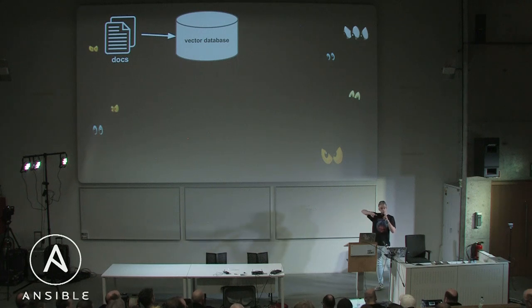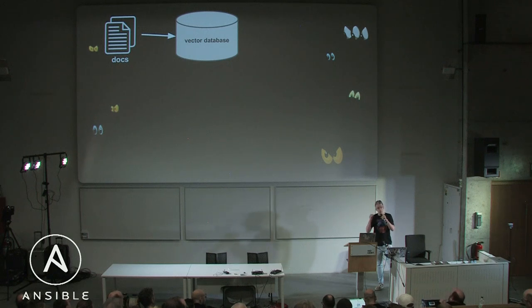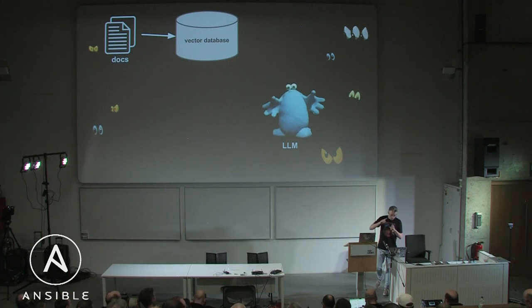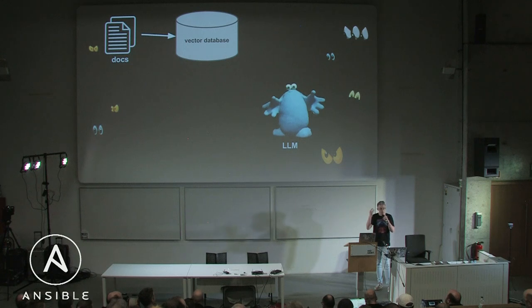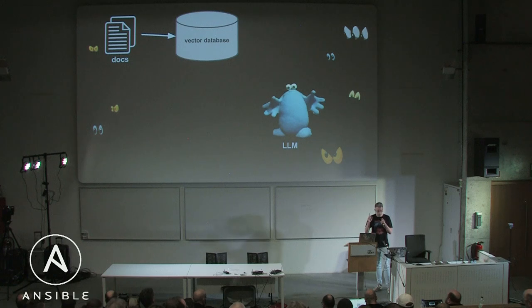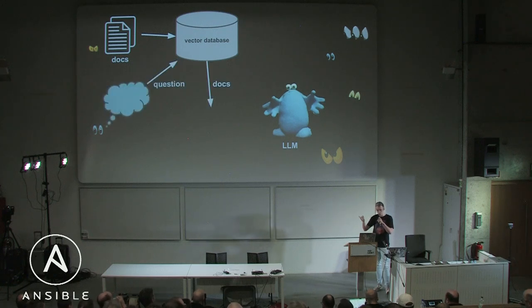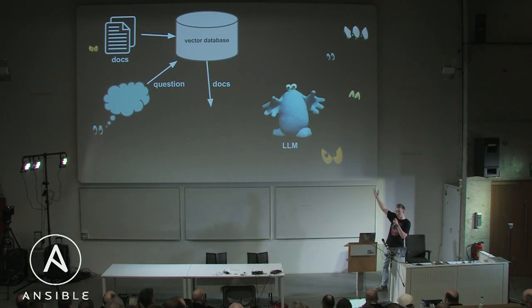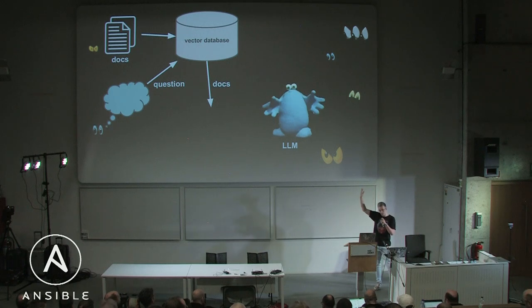First, you dump all of your documentation into a vector database. It does the thing — puts it on a graph — and that gives you a really, really good search. We also have the LLM, which is good at understanding documents, deciding what's relevant, and summarizing. So to integrate them: first we take a question from a user, give that question to the vector database, and the vector database returns some documentation from our internal docs that it thinks satisfies that question.